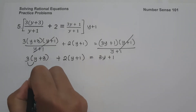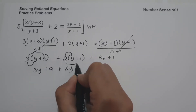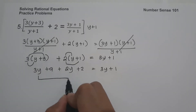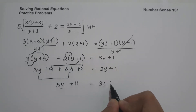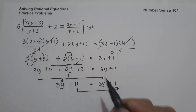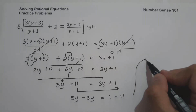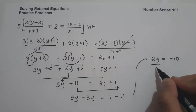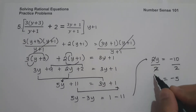Expanding: 3 times y is 3y, and 3 times 3 is 9, plus 2 times y is 2y, and 2 times 1 is 2, equals 3y plus 1. Combining like terms: 3y plus 2y is 5y, and 9 plus 2 is 11, equals 3y plus 1. Moving 3y to the left and 11 to the right: 5y minus 3y equals 1 minus 11. So 2y equals negative 10. Dividing both sides by 2, the value of y is negative 10 over 2, that is negative 5, and this will be our answer.